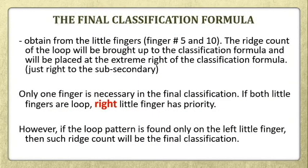Now let us proceed to the final classification formula. It is obtained from the little fingers — fingers number 5 and 10. The ridge count of the loop will be placed at the extreme right of the classification formula. Only one finger is necessary for final classification. If both little fingers are looped, the right little finger has priority.